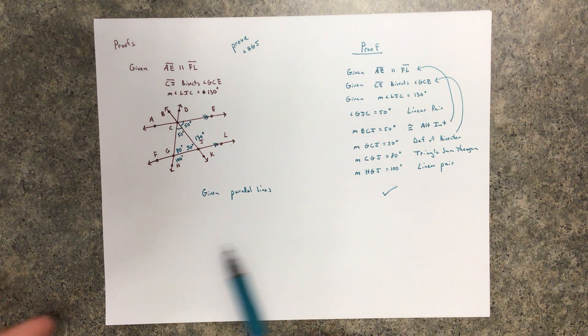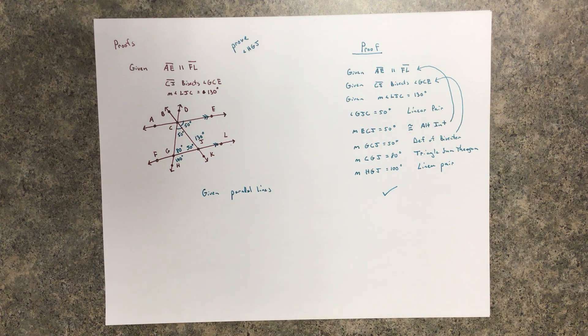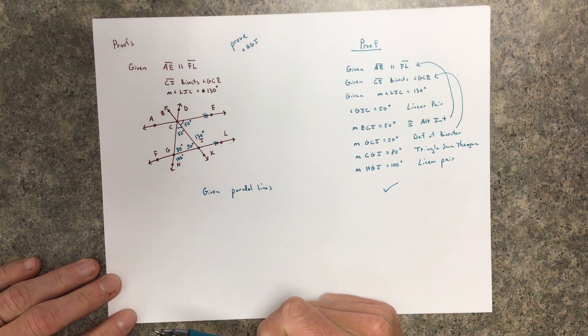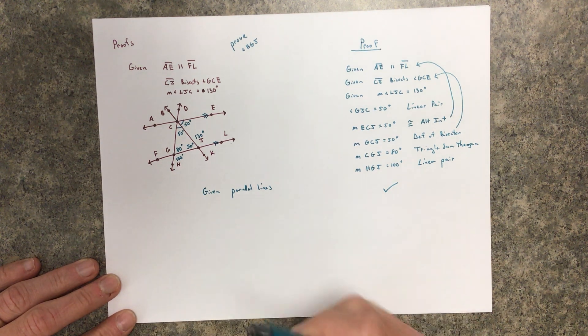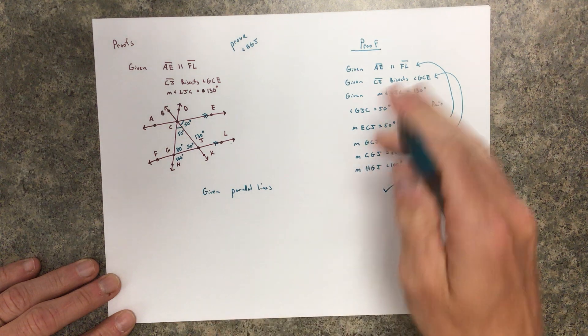The next one, maybe you're going to use, these lines are parallel, and you're going to figure out that the correspondings have to be congruent because the lines are parallel.